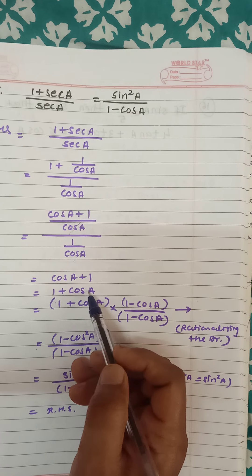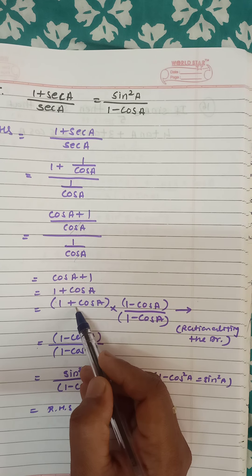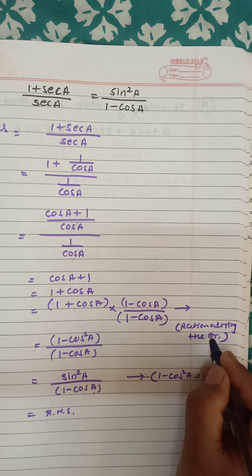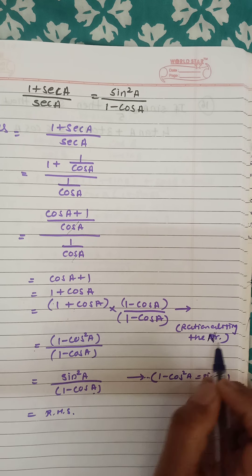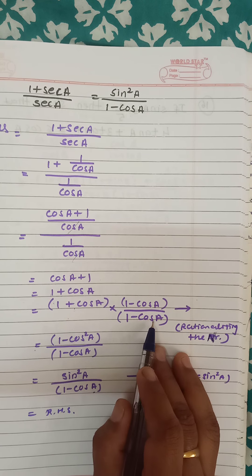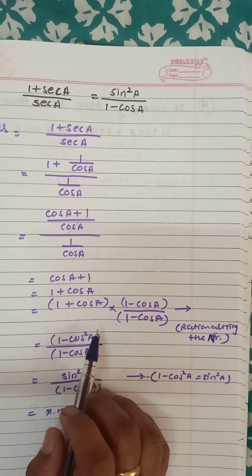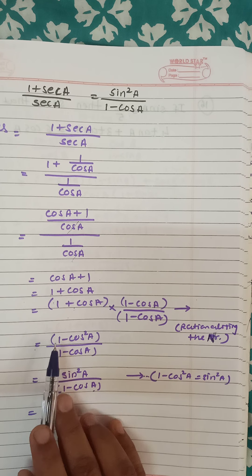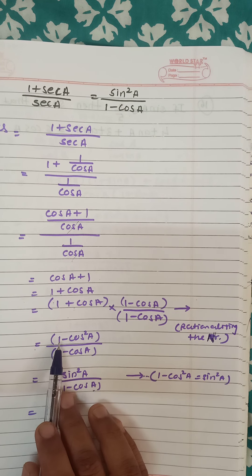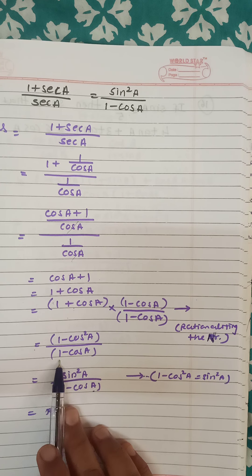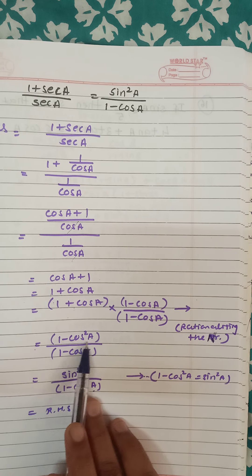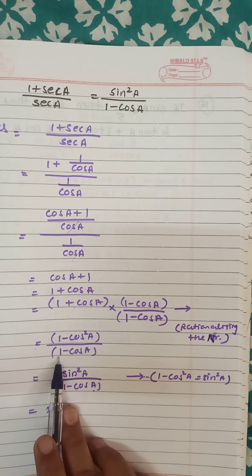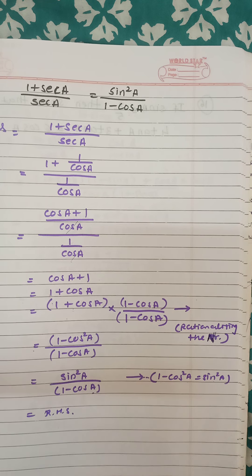So only 1 plus cos a remains. We can't get the answer directly, so we rationalize the numerator by multiplying and dividing by 1 minus cos a. This gives (a plus b)(a minus b) = a² minus b², so 1 minus cos²a = sin²a in the numerator, with 1 minus cos a in the denominator. Write sin²a upon (1 minus cos a), which equals the right hand side.